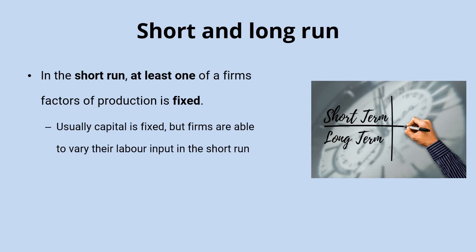If a firm wanted to increase its scale of production, it could probably more quickly and easily do that by adding to the labor input — maybe getting workers to work overtime or possibly adding some temporary staff — whereas expanding the scale of operations using additional big machinery and new premises is going to take a significantly higher investment of time. So in the short run, at least one of the firm's factors of production is fixed, and generally it's labor that's able to be varied.